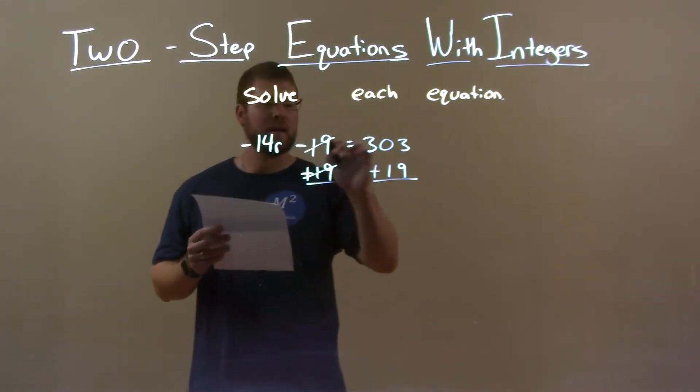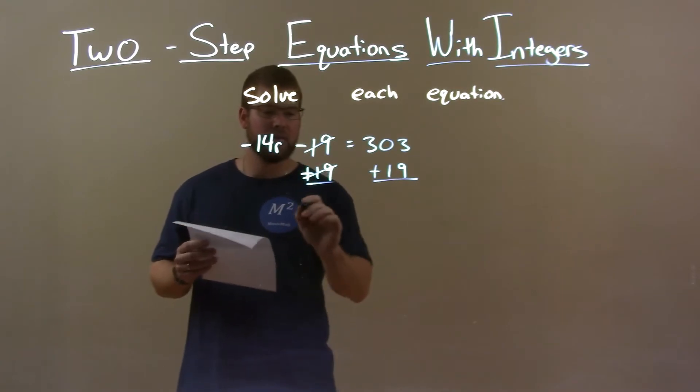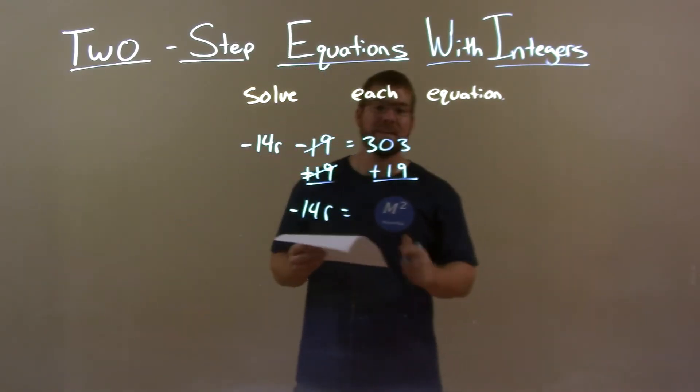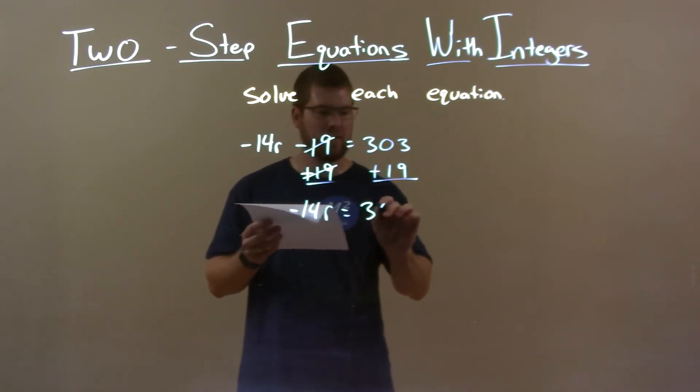That will eliminate the 19 on the left, giving me left by itself negative 14r. Now, 303 plus 19 is 322.